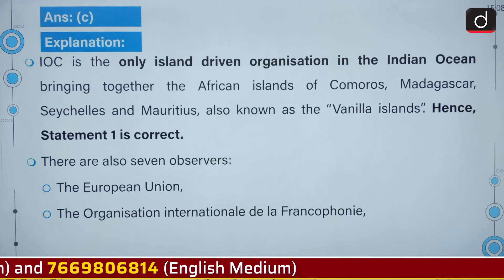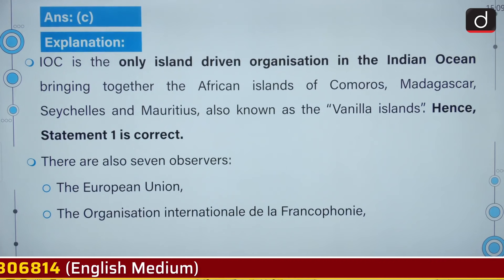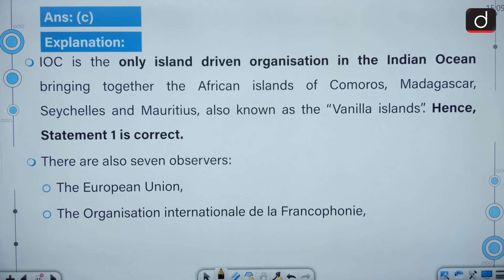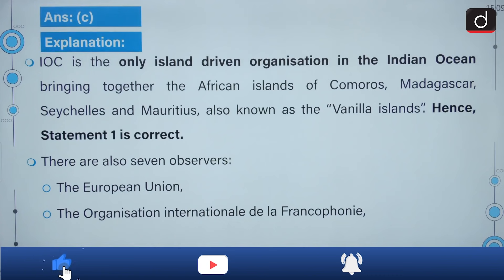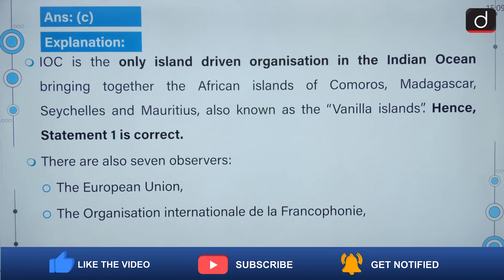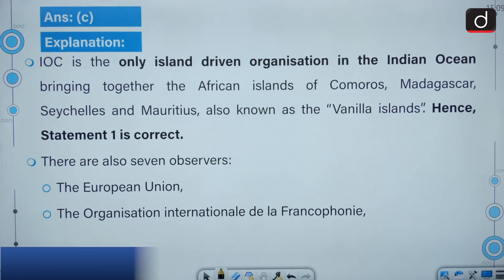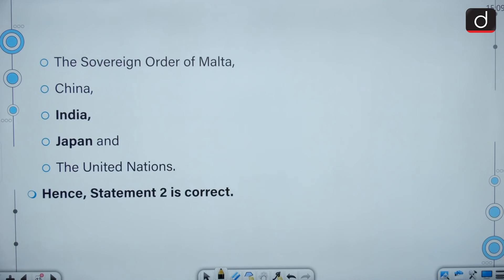The IOC is the only island-driven organization bringing together the African islands of Comoros, Madagascar, Seychelles, and Mauritius — also known as the Vanilla Islands. There are seven observers: the European Union, the Organisation Internationale de la Francophonie, the Sovereign Order of Malta, China, India, Japan, and the United Nations.